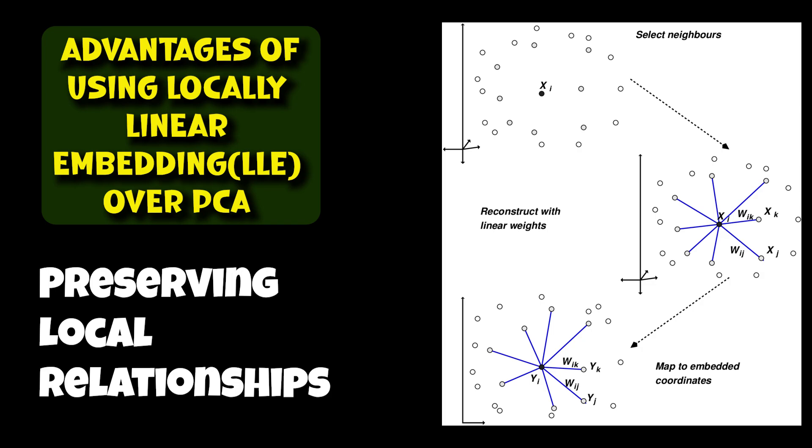As a result, LLE can better maintain the similarity between nearby points in the original high-dimensional space when projecting them into a lower-dimensional space. This property is particularly useful when dealing with data that exhibits local patterns or structure.